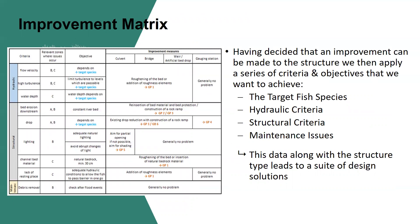For improvement measures, the guidance has developed a matrix where, based on certain criteria and objectives, we are provided with a design solution. The criteria and objectives we look at are the target fish species in the catchment, hydraulic criteria such as flow, turbulence and water depth, structural criteria like a drop in the water level, channel bed material and the transition from light to extreme darkness, and then there are maintenance issues.